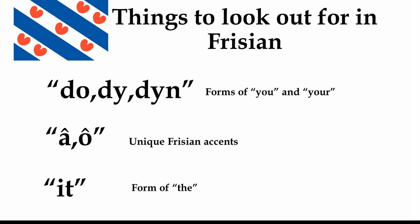And finally, we're going to talk about 'ut', which is a form of 'the'. You can probably tell that this is quite similar to 'het', which is the Dutch version, because they are related languages. But this one is 'ut', and this is only in Frisian. So when you see 'ut' before quite a lot of words, then you know that it's probably going to be Frisian, because it's saying 'the' and then whatever it's describing.